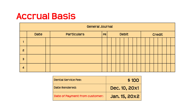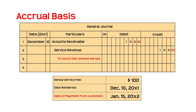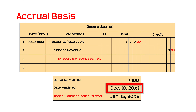As for accrual accounting, on December 10, 20x1, a journal entry will be made: debit to accounts receivable and credit to service revenue. The reason an entry is made is because you have already rendered the service and the client is duty-bound to pay you. The service is legally rendered and thus it is an accountable event requiring a journal entry. Remember that the accrual basis recognizes revenue when earned — your business recognizes income in the entry even though you haven't received the money yet.